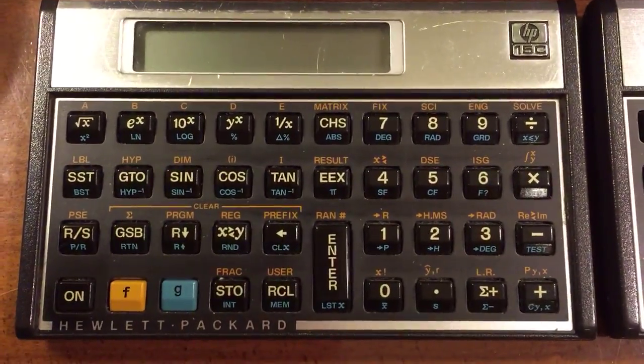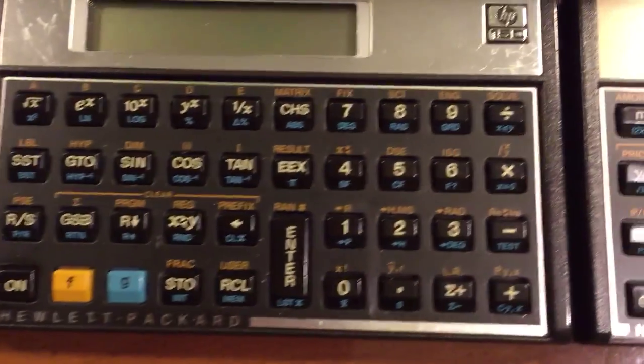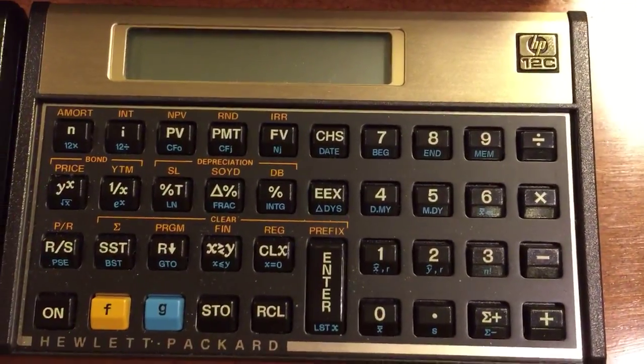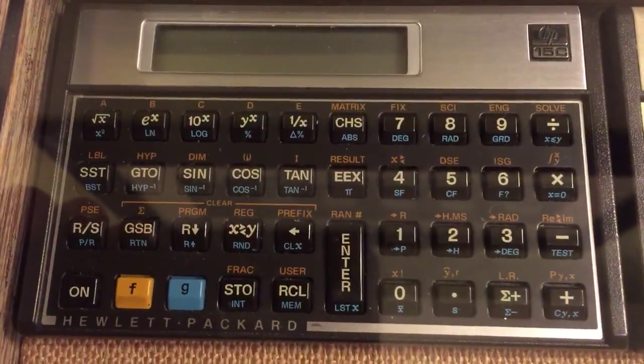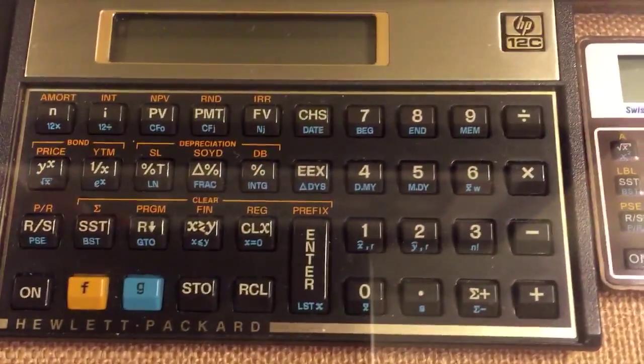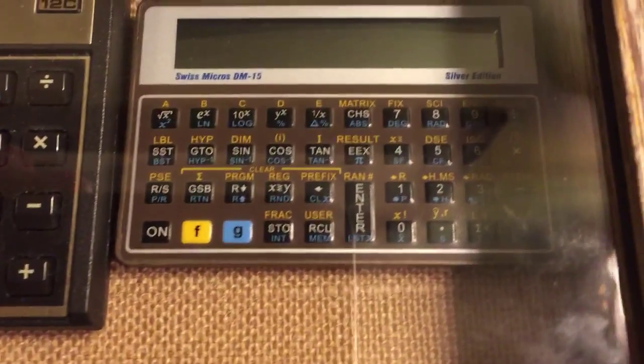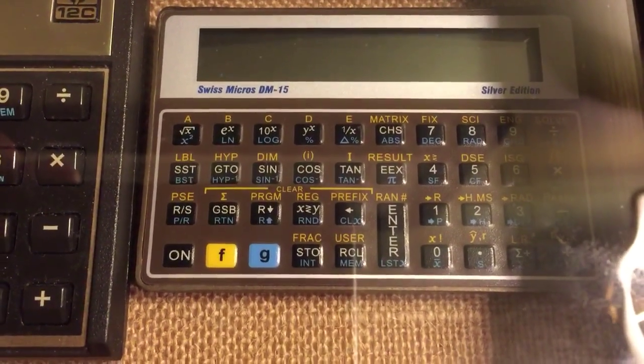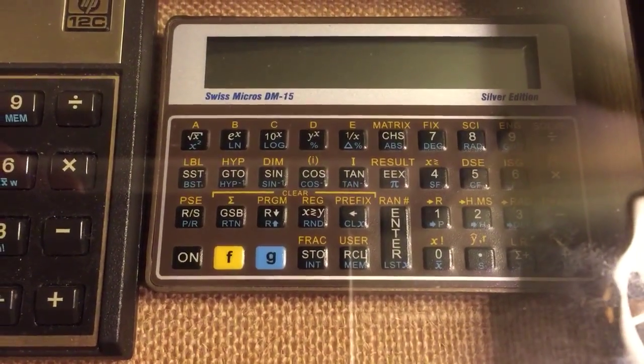There's a 15c. There's a 15c. There's an old 12c. We've got another 15c. Another old 12. Look at that. That's a new little version, Swiss Micros DM15. Check it out.